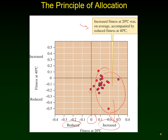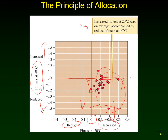But the lines that had adapted to 20 degrees showed, in general, lower fitness compared to their ancestors when grown at 40 degrees. The y-axis shows fitness at 40 degrees. Zero means no change; the top half means doing better; the bottom half means growing slower. For most of these populations, the data points are below zero on the y-axis — meaning most populations show a reduction in fitness at 40 degrees Celsius compared to 20 degrees Celsius.